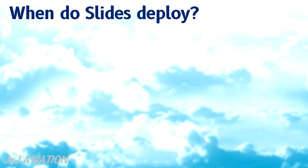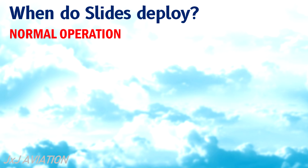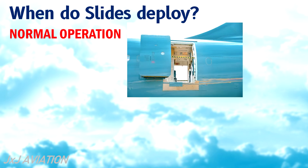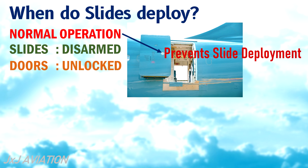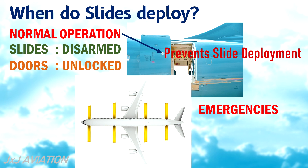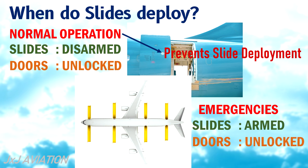When do the slides deploy? During normal operations, before opening the doors, the slides are disarmed and the doors are unlocked — this prevents the slide from being deployed. But if the slides are to be deployed, the slides should be armed and the door is unlocked, which causes the slide to deploy outside the aircraft.